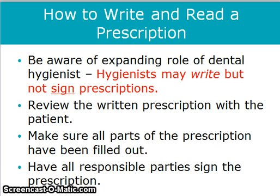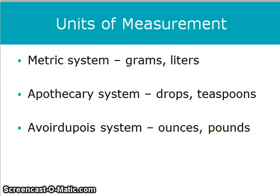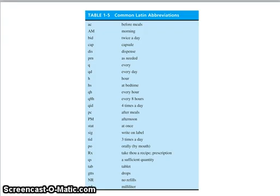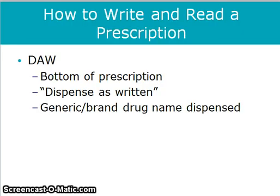In prescriptions, there are three different types of units of measurement. Hygienists may write but not sign prescriptions. Make sure that you review the written prescription with the patient and that all parts of the prescription have been fully and correctly filled out. Make sure that all responsible parties sign the prescription. The three systems are the metric system, the apothecary system, and the avoirdupois system, which are used interchangeably. The apothecary system is usually used for compounding pharmacies. If DAW is written at the bottom of a prescription, it means dispense as written, which means that if written for a trade drug, a generic must not be substituted.